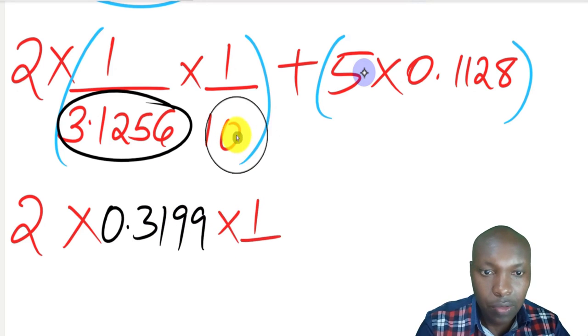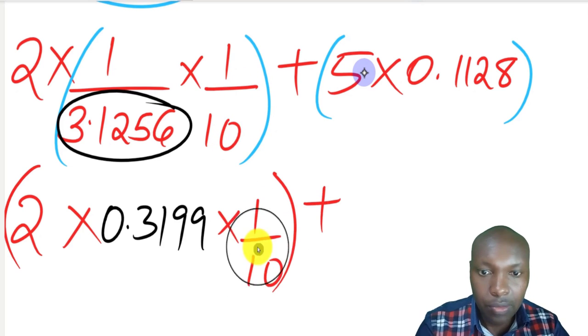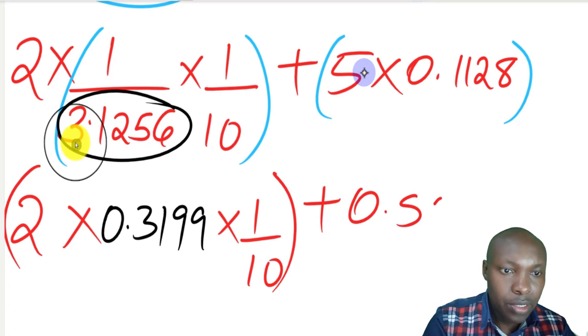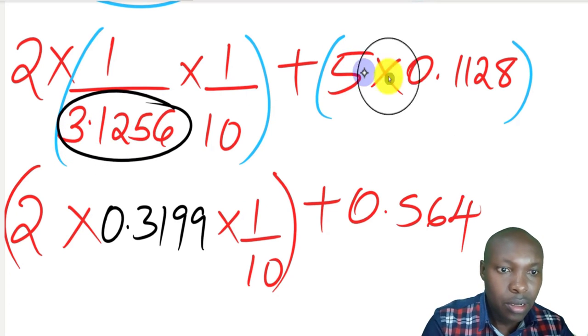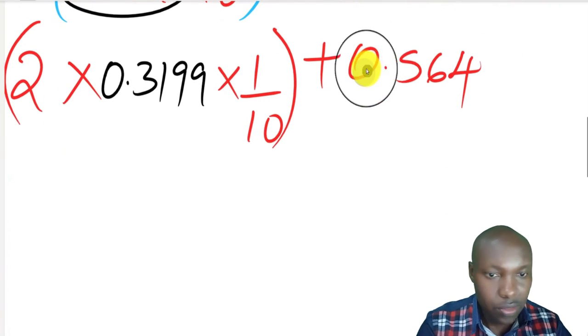Then we don't get the reciprocal of 1 over 10. We just leave that one the way it is, 1 over 10. Then this part, we just need to multiply out to get the product. We get that one as 0.564.